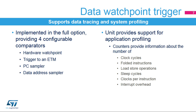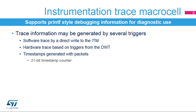The embedded data watchpoint trigger can also generate reports about the application profile. The instrumentation trace macro cell, or ITM, supports printf-style debugging information for diagnostics. Packets can be invoked by software, a direct write to the ITM, or by hardware, triggered from the data watchpoint trigger, or DWT.